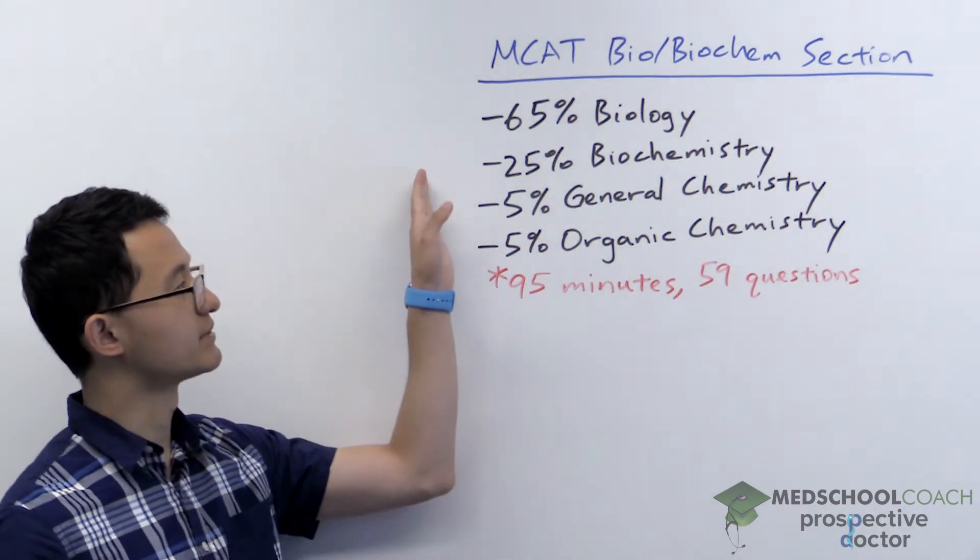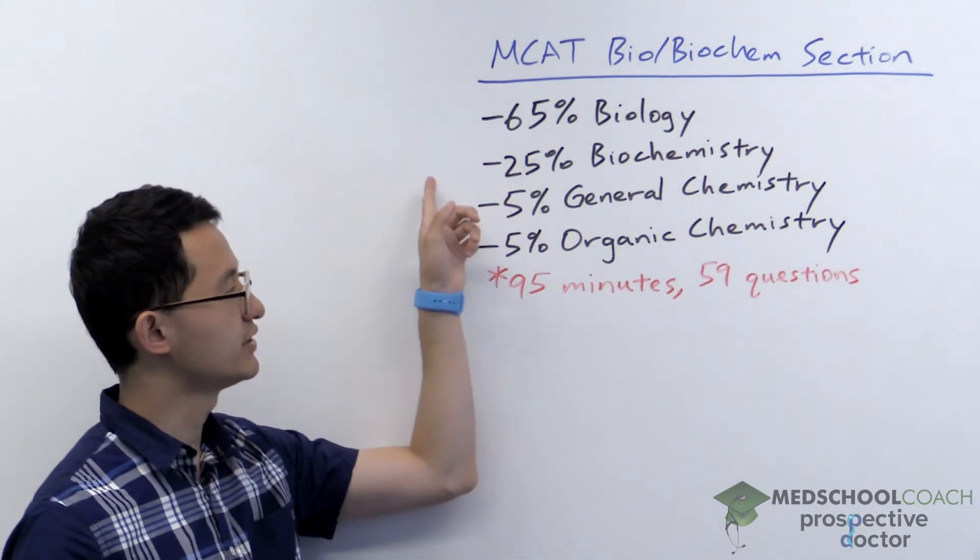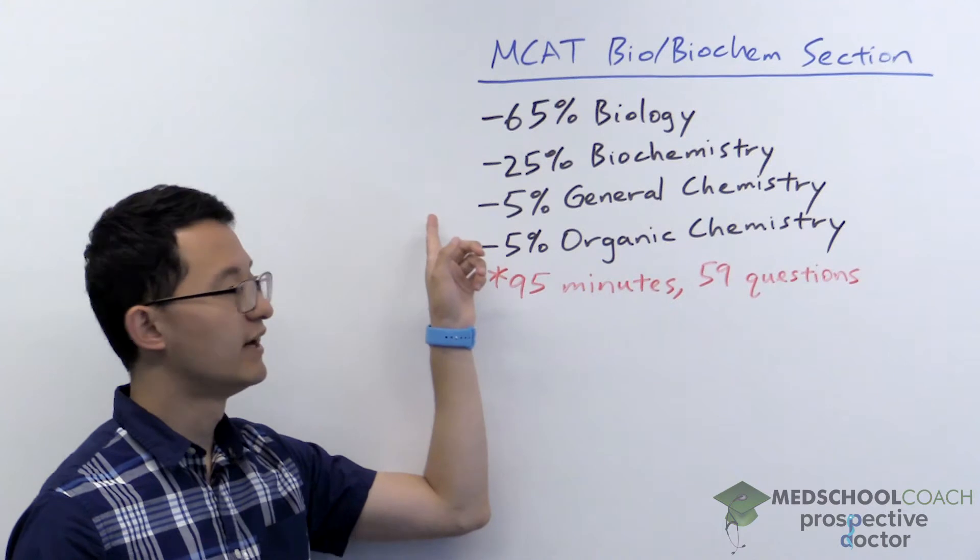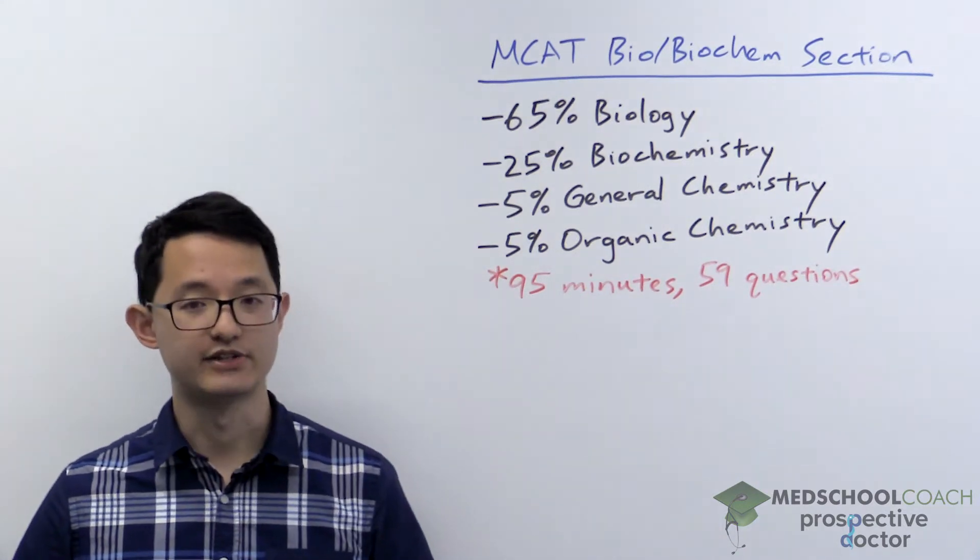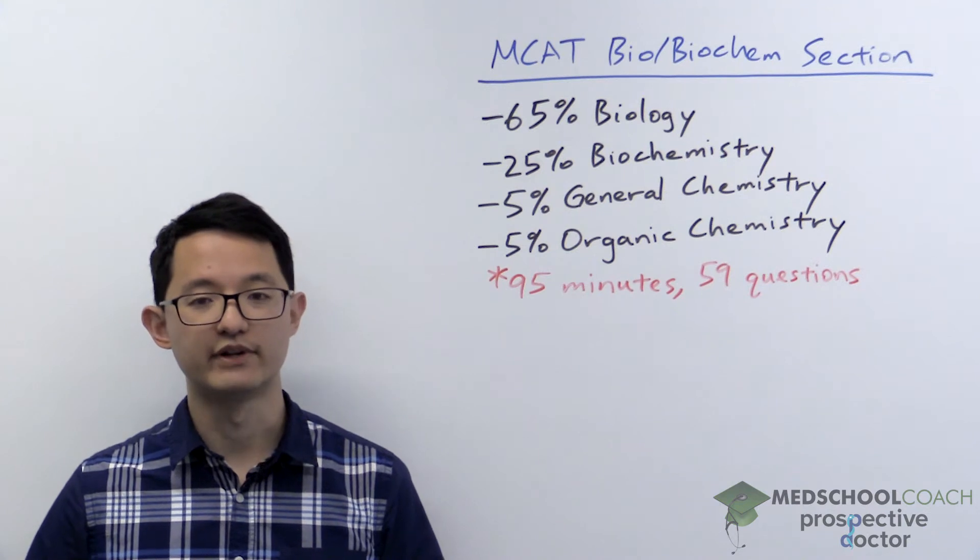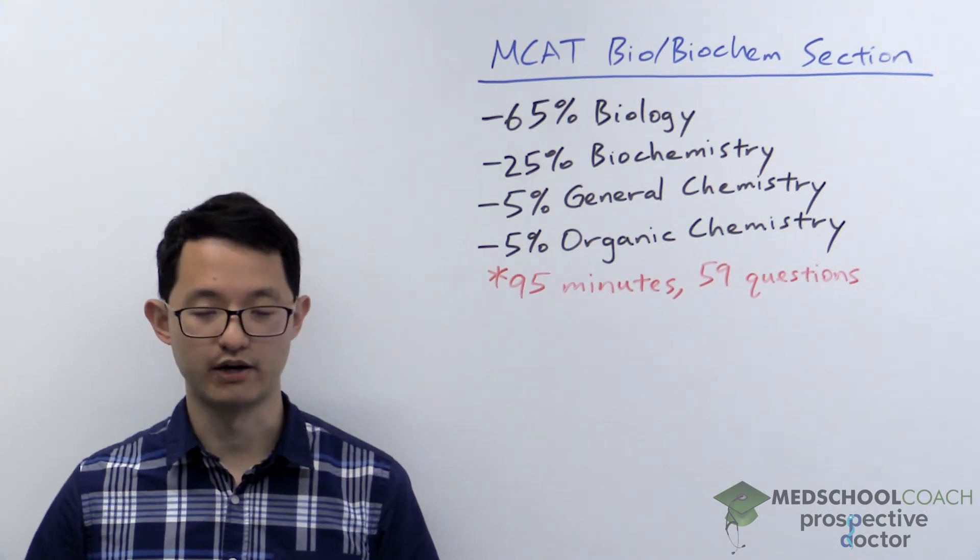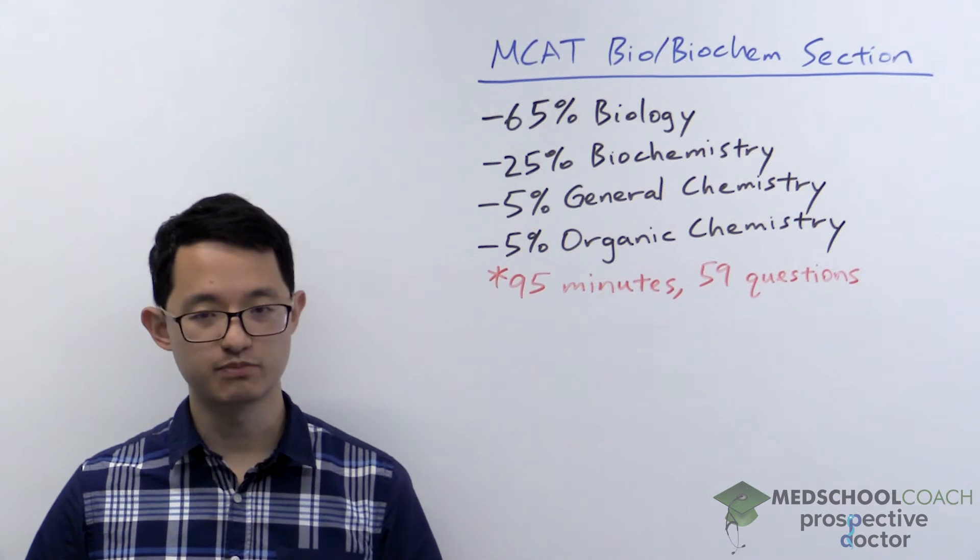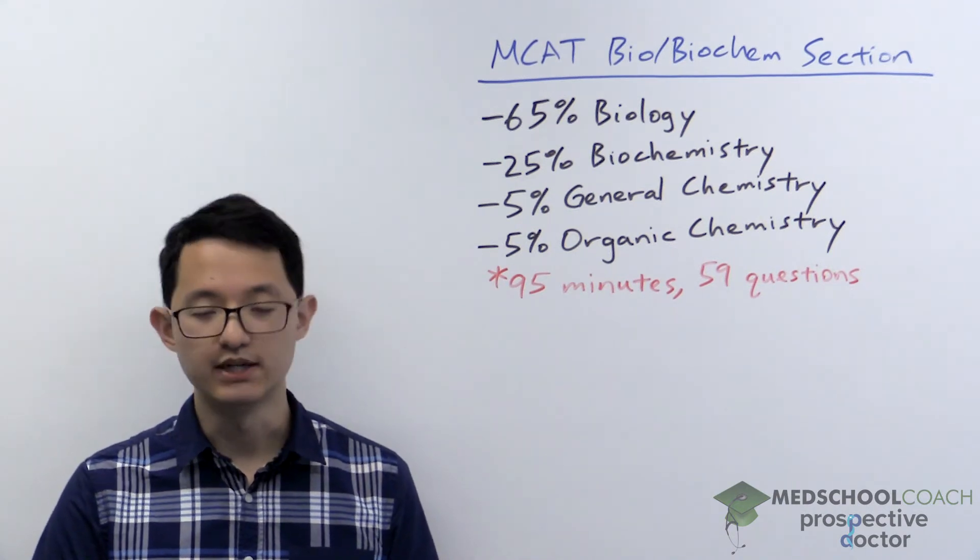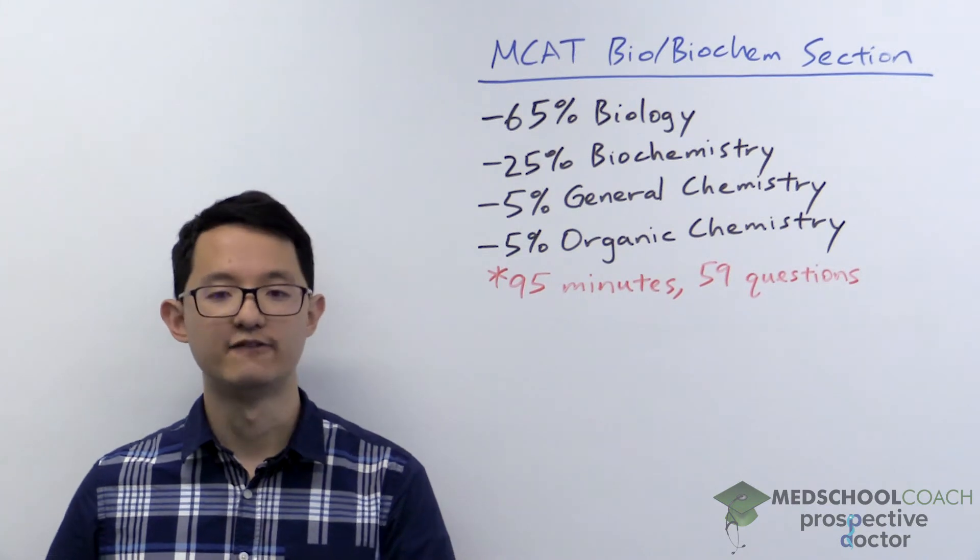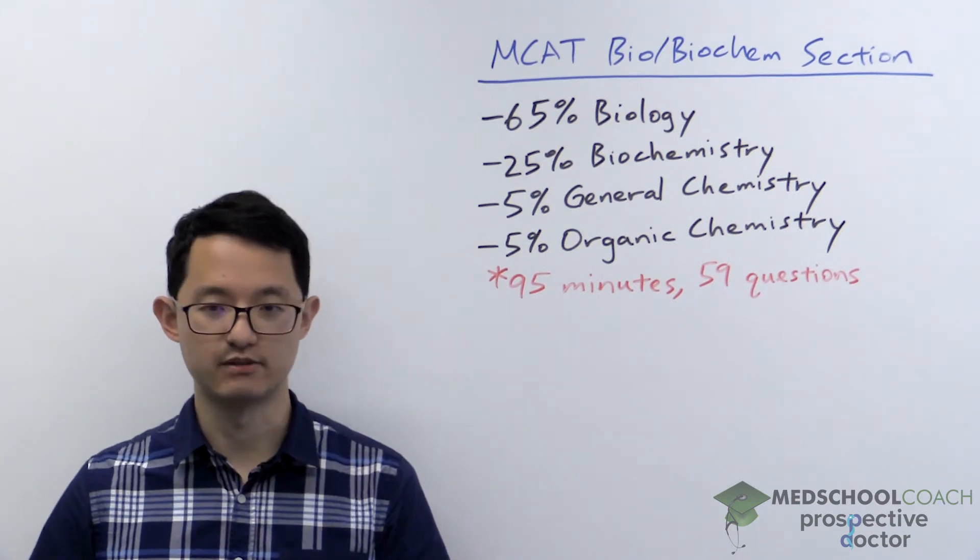The MCAT bio biochem section is 65% biology, 25% biochemistry, 5% general chemistry, and 5% organic chemistry. As you can see, the majority of the questions are on biology and the biology topics tested are split about 50-50 between molecular and cell biology, the small stuff, and physiology, the organ systems.